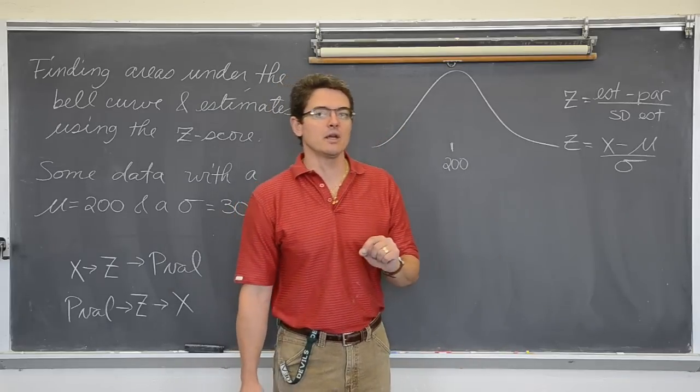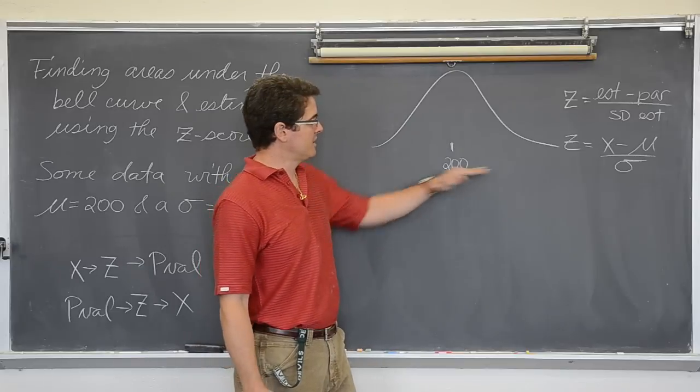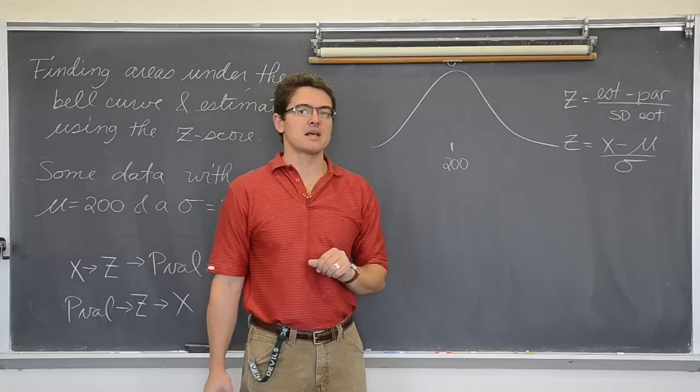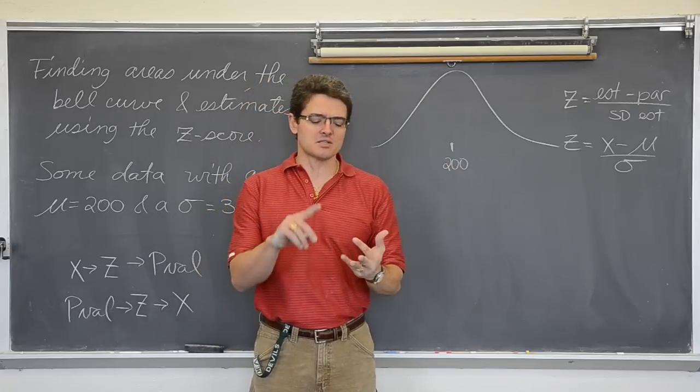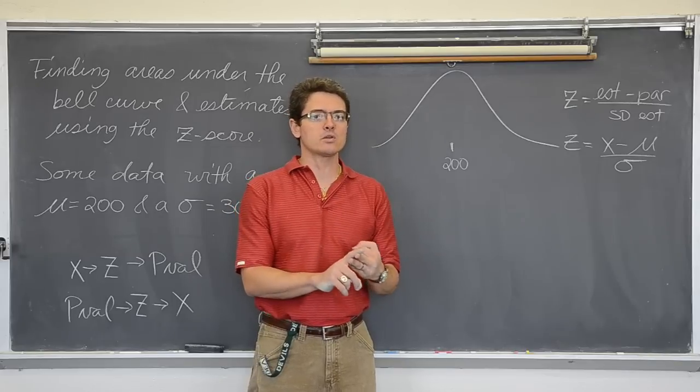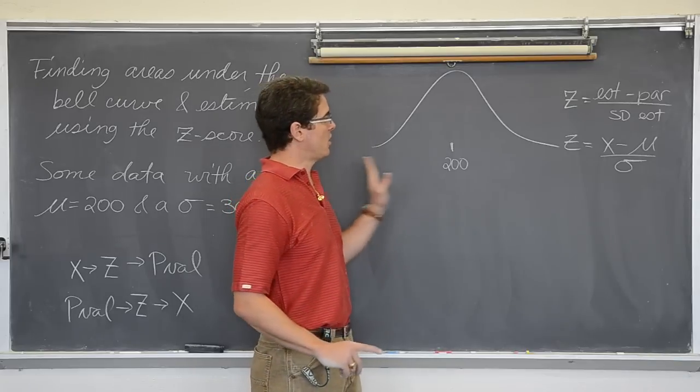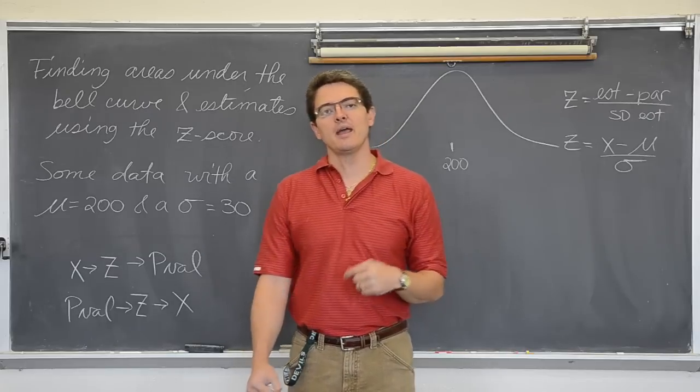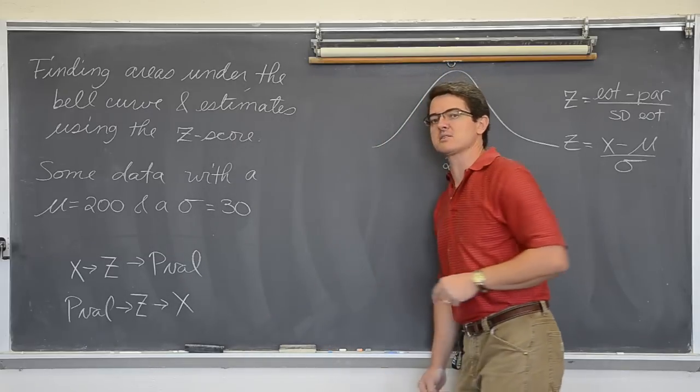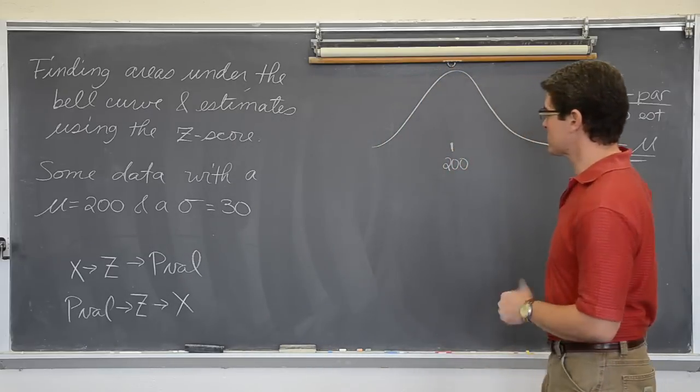And again these are on univariate quantitative data, that data that is along the x axis. We are not talking about scatter plots or regression lines or chi-square which we will talk about at the end of the year. Just one nice set of data that is quantitative and continuous along the x axis. So let's answer some questions.